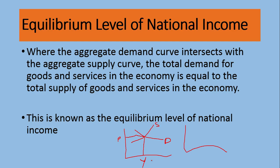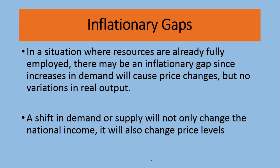Since the economy is not producing just one good but hundreds and hundreds of goods, all goods are taken into account — their aggregate demand and aggregate supply — and we see how equilibrium is determined at what level of price.